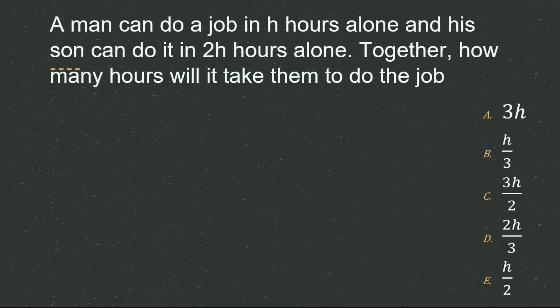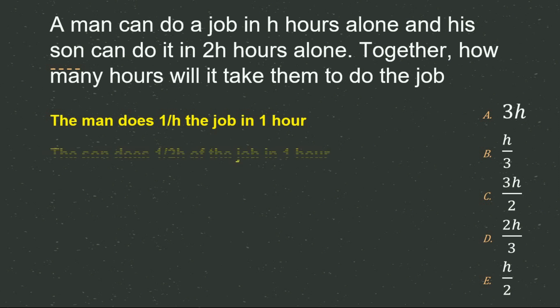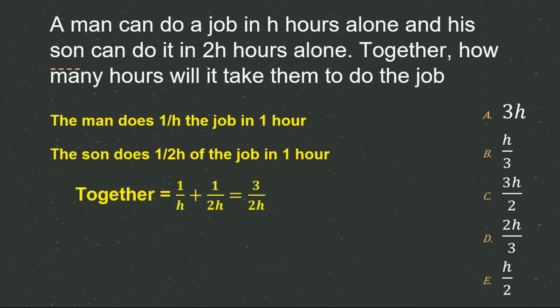The last question: a man can do a job in h hours alone, and his son can do it in 2h hours alone. Together, how many hours will it take? The man does 1/h of the job per hour and the son does 1/(2h) per hour. Adding these gives 3/(2h) of the job per hour. To find the total time, take the reciprocal: 2h/3. So D option is the correct answer.